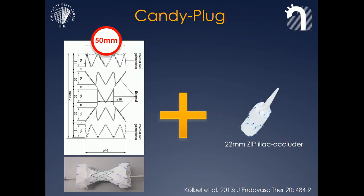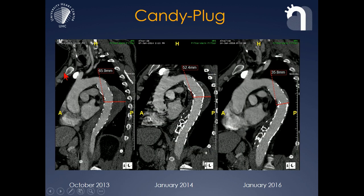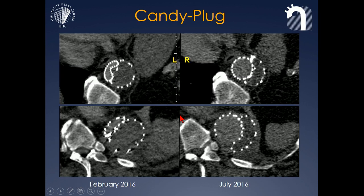That made us ask the Cook Medical Company to build us occluders that are larger than that, as in our experience the false lumen can be much larger than 24 millimeters. They have been building this plug that has a 50-millimeter diameter and a smaller diameter in the middle, which then can be occluded with a zip occluder. You see a typical example here with an aneurysm enlarging after TEVAR, extending down to the celiac artery, and obstructing the false lumen with this combination of a candy plug and an iliac zip occluder.